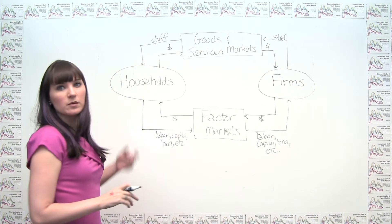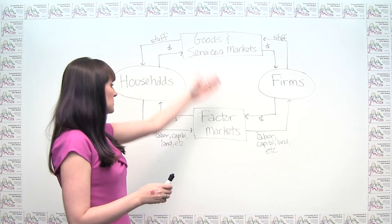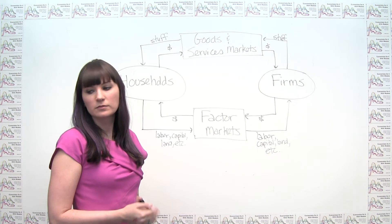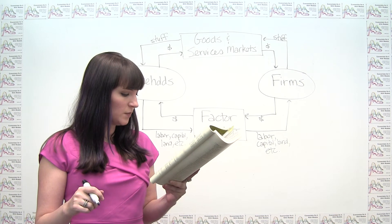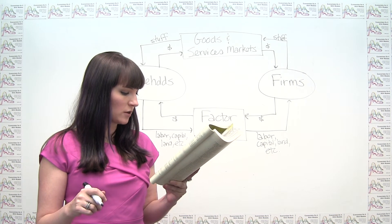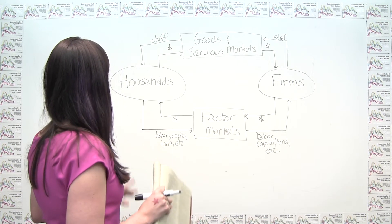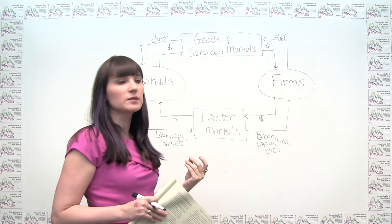So now the problem is asking us to just take different scenarios and identify where they fit on this circular flow diagram. So let's think about how to do that. So part A says, Selena pays a storekeeper $1 for a quart of milk. So we see what's going on here. Well, we're in the market for goods and services, because we have the households buying something.